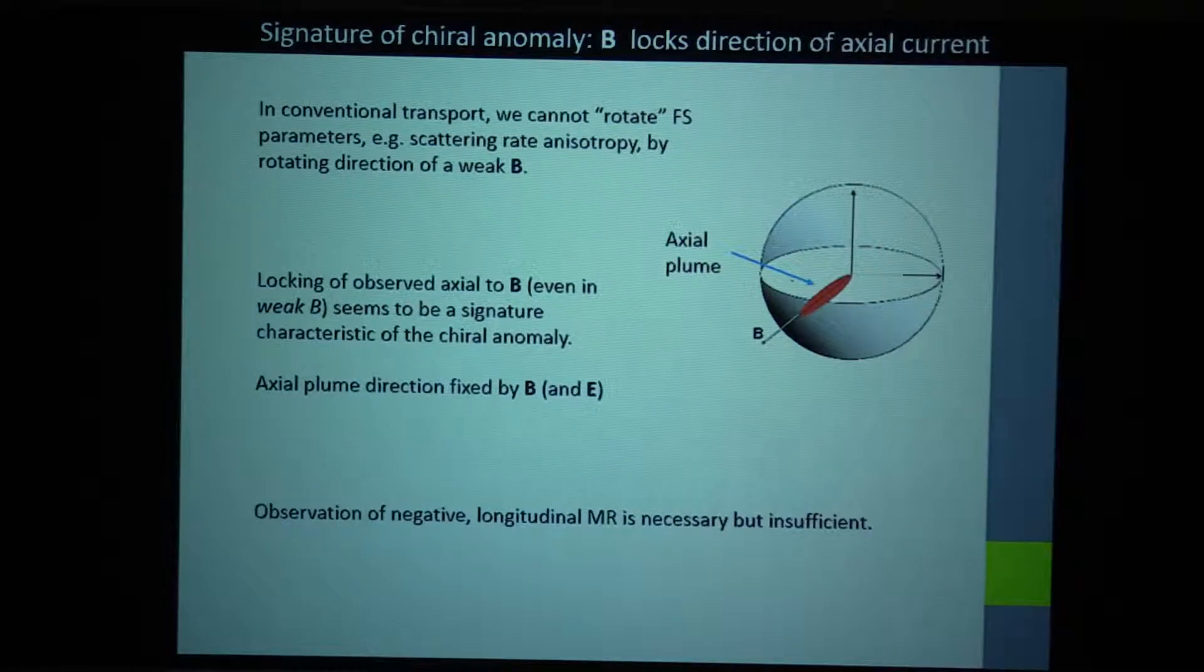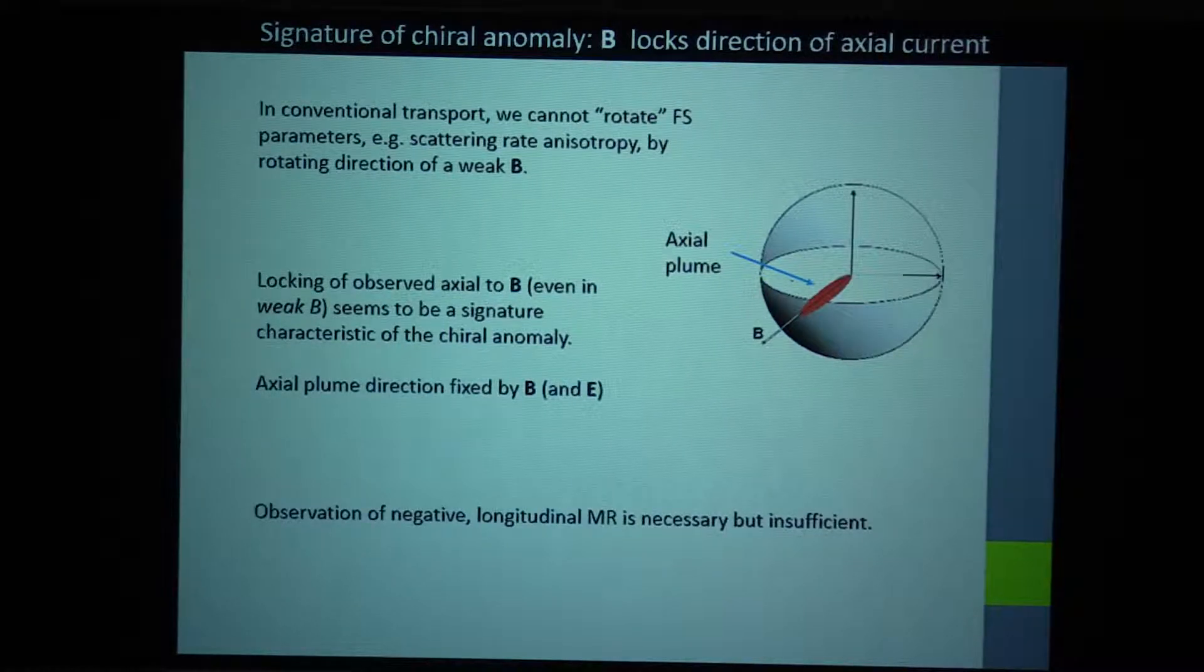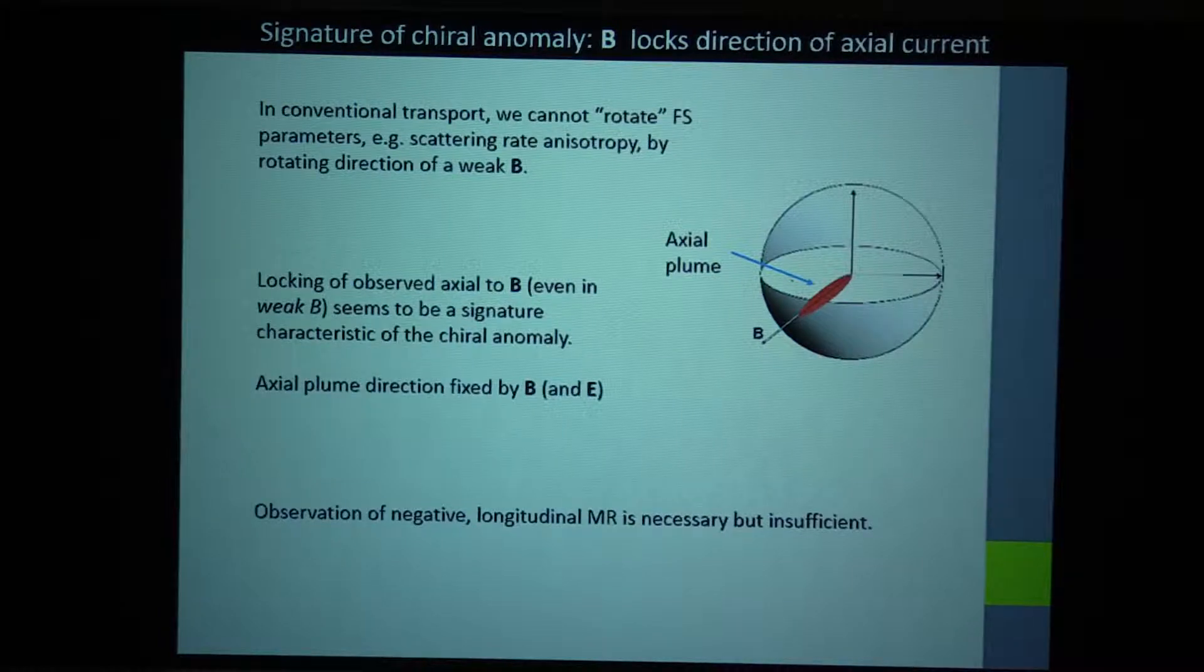So to sum up, I feel that the signature of the chiral anomaly is this Drude-ability, and the fact that the plume is so narrow. So it's this locking of the field to the plume that I think will really define this enhanced current. The observation, the near observation of the negative longitudinal MR is of course necessary, but it's really insufficient. And the reason will become apparent in the next slide.